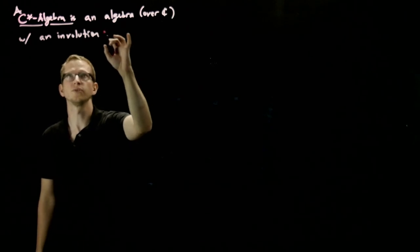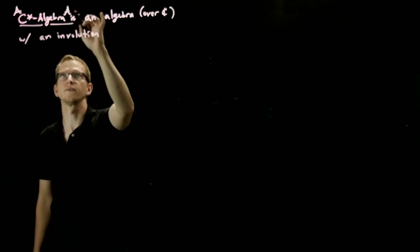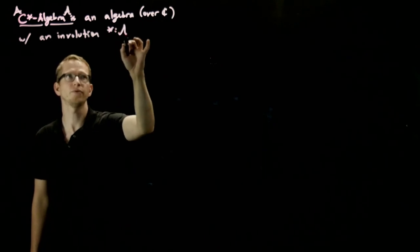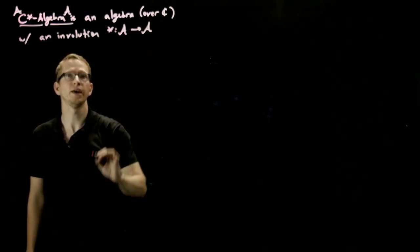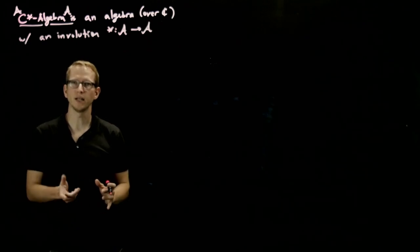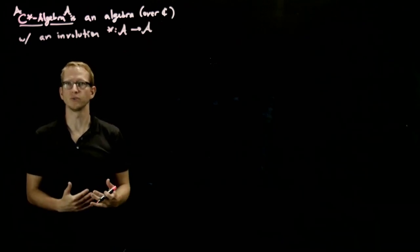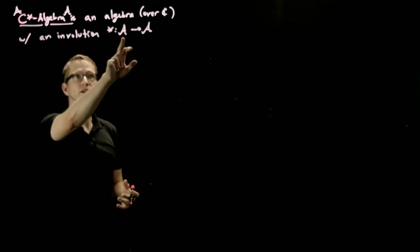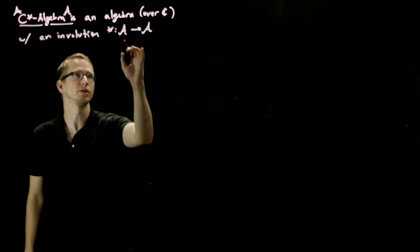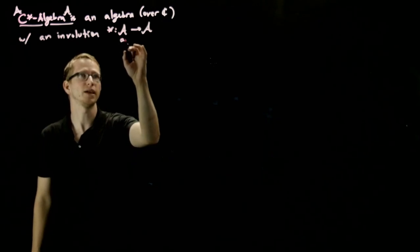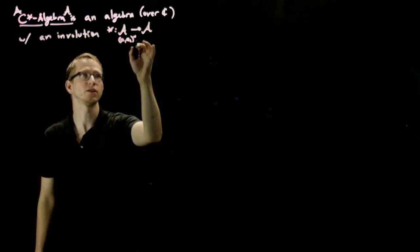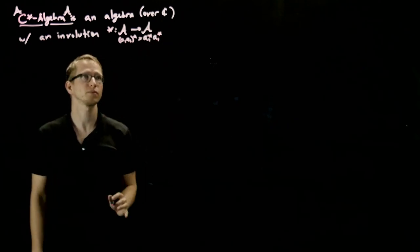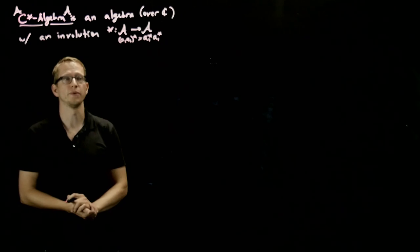An involution means that you have a map, let's call this C*-algebra A, with an involution star, which is a map from A to A. This map being an involution means that if you apply it twice, you get back to where you started. Because it's an involution, it is also an anti-homomorphism: if you have two elements A1 and A2 and take their star, this equals A2-star times A1-star — you apply it in the other direction.